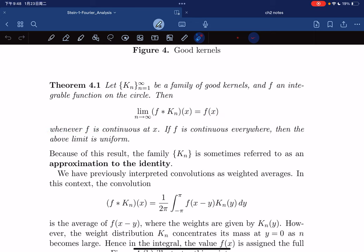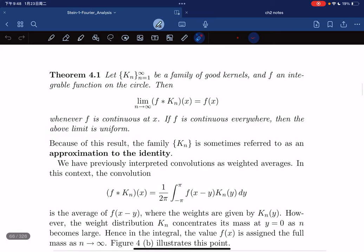If f is continuous on its domain, then the above limit is uniform. Here's some notes by the author. This is sometimes referred to as an approximation to the identity because we're approximating to f(x).